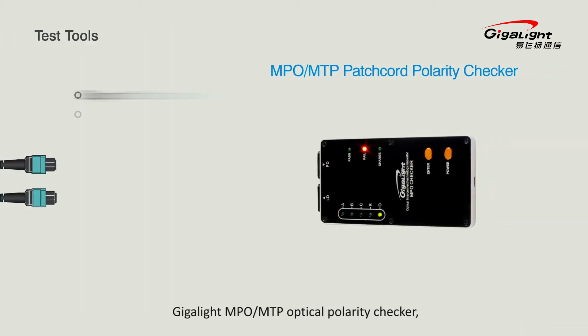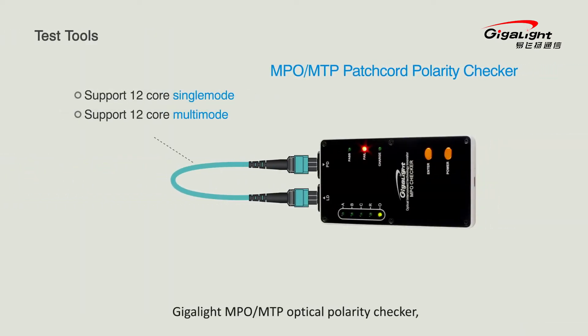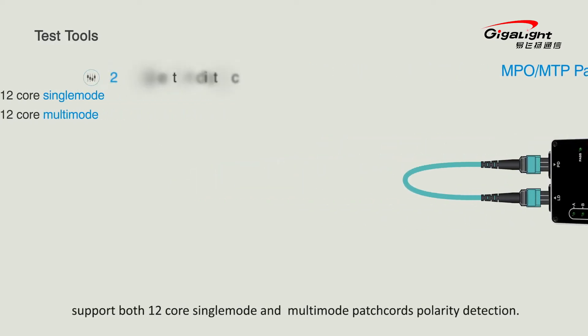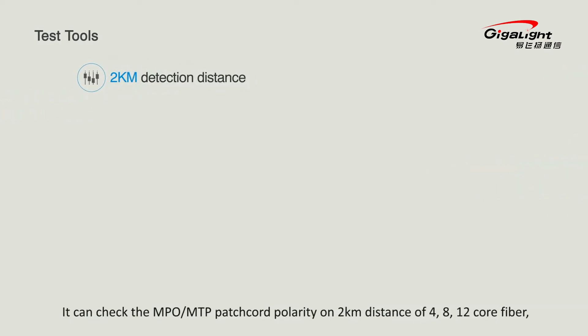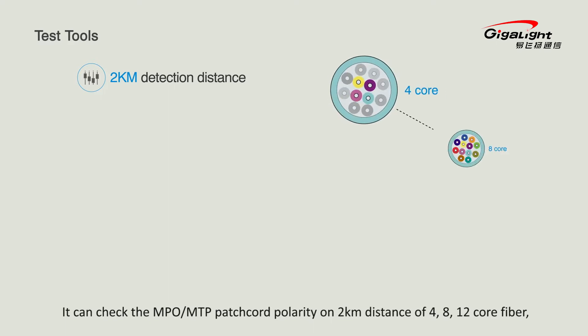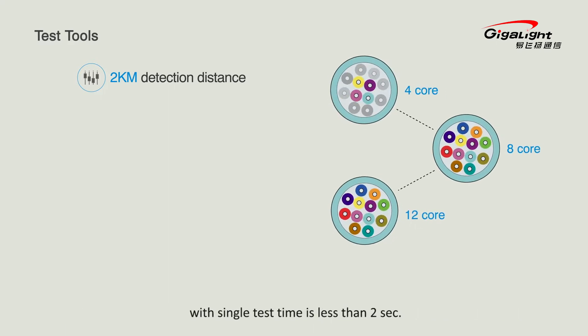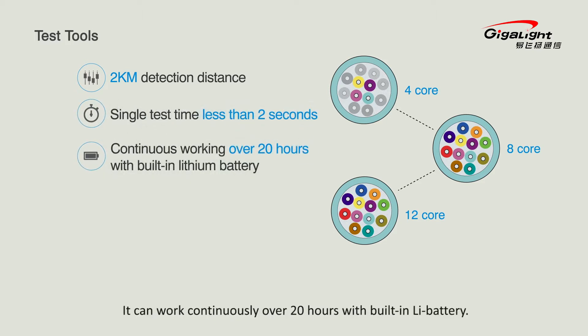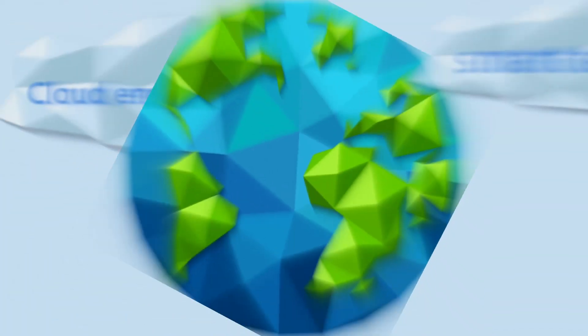GigaLight MPO/MTP Optical Polarity Checker supports both 12-core single-mode and multi-mode patch cord polarity detection. It can check the MPO/MTP patch cord polarity over a two-kilometer distance for a 12-core fiber, with a single test time of less than two seconds. It can work continuously for over 20 hours with its built-in lithium battery.